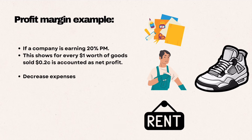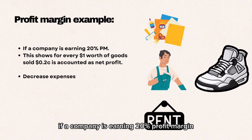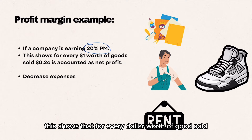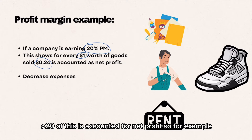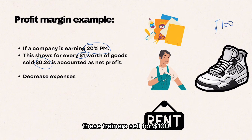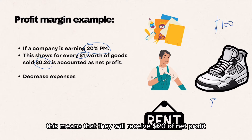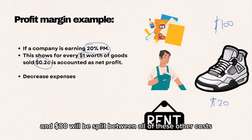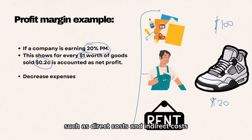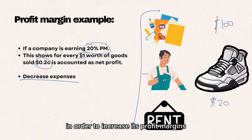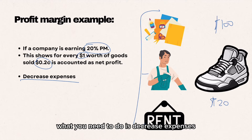For example, if a company is earning a 20% profit margin, this shows that for every dollar's worth of goods sold, 20 cents is accounted for as net profit. So if these trainers sell for $100, they will receive $20 of net profit, and $80 will be split between all other costs such as direct costs and indirect costs. In order to increase its profit margins, you need to decrease expenses.